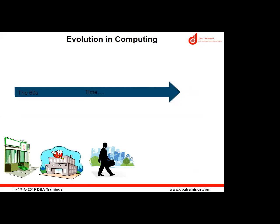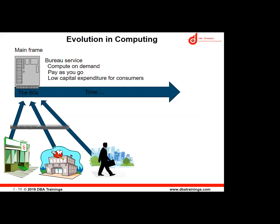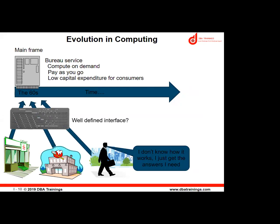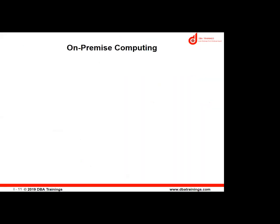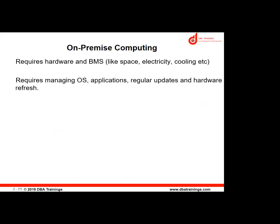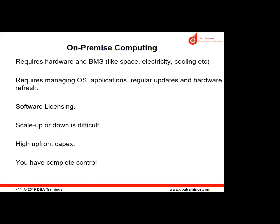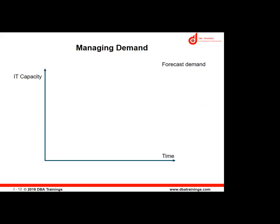The evolution of computing: we talked about why cloud is in more demand and what logic is behind it. Business owners don't care about the details — they want the best service. They don't know how you give it, they just need the answer. That's business nowadays. We then talked about the challenges of on-premises computing — why cloud is getting popular — including hardware requirements, BMS, different resource licensing terms, scale up and down, higher upfront CapEx investment, and responsibility.